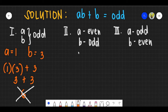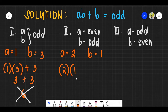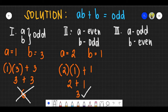For Roman numeral II, A is even and B is odd. Let's say A is 2, B is 1. Substituting: A times B plus B gives 2 times 1 plus 1, which equals 3. And 3 is an odd number. So Roman numeral II can be our answer.